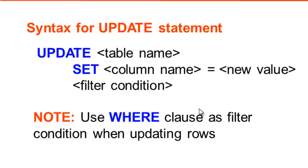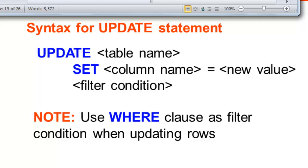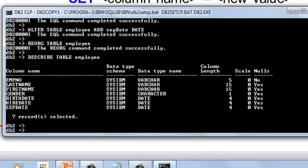Next is UPDATE. If we want changes on our table and need to update some records, we use the UPDATE statement. This would be the syntax in updating our column. SET specifies which column to update and assigns it with a new value after the equal sign. We use the WHERE clause as a filter condition when updating rows. The employee number column with its corresponding data value will be used to select which row to update.